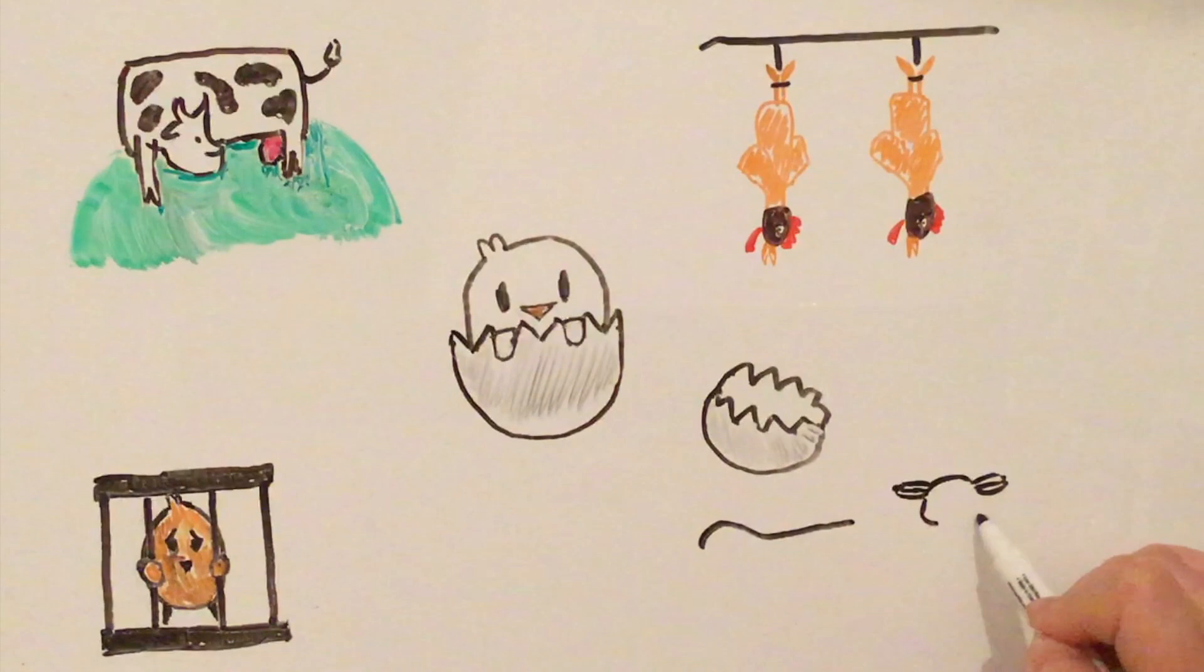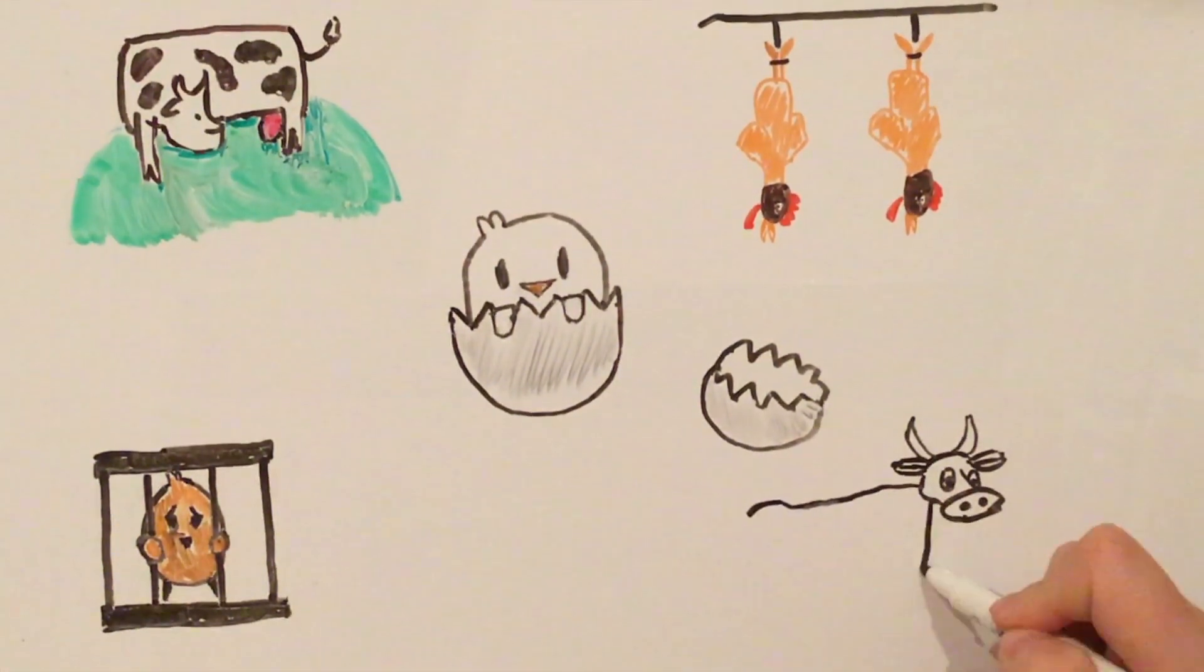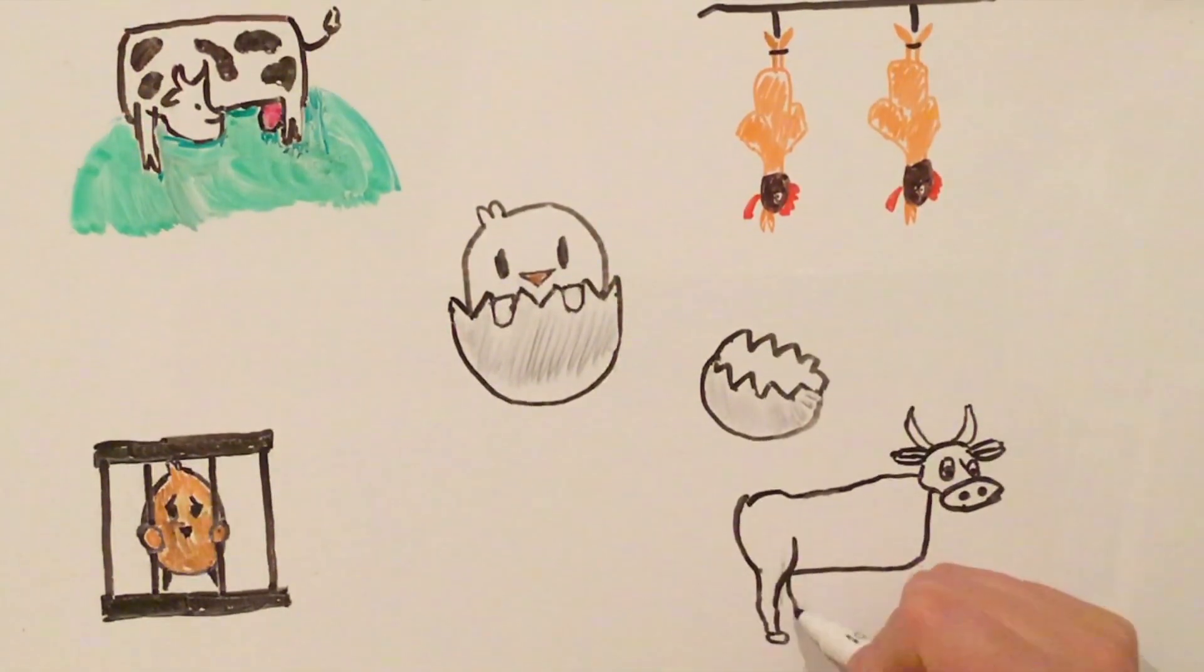Similarly, when cows are killed, sometimes they're not stunned correctly before their throats are cut, which causes them to suffer unnecessarily.